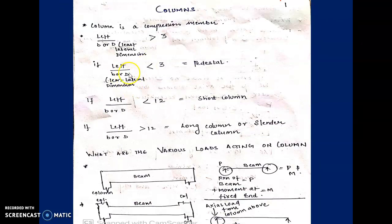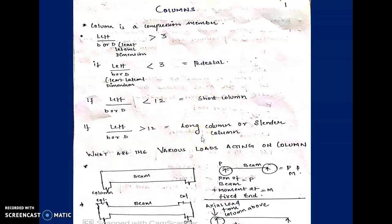If effective length divided by least lateral dimension is less than 3, we consider it a pedestal, not a column. If it is a column and effective length by least lateral dimension is less than 12, it is considered a short column. Greater than 12, it is a long column or a slender column. Slender by itself means the length is much larger compared to its least lateral dimension — it will look quite slender.